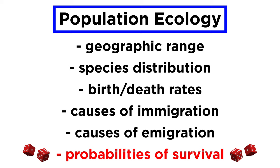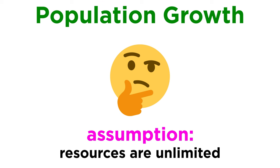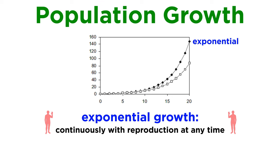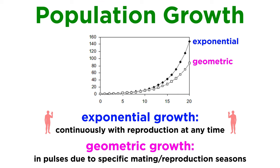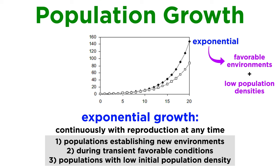Now let's discuss population growth. Populations can grow in two different modes: at geometric rates or at exponential rates. Keep in mind that we will be assuming the presence of unlimited resources which urge population growth. Exponential growth happens continuously, with reproduction happening at any time, like in human populations. Geometric populations grow through pulsed reproduction instead — an example of this is deer, which have a constrained mating and reproduction season. Exponential growth occurs in favorable environments and at low population densities, and may apply to populations establishing new environments, during transient favorable conditions, and in populations with low initial population density.